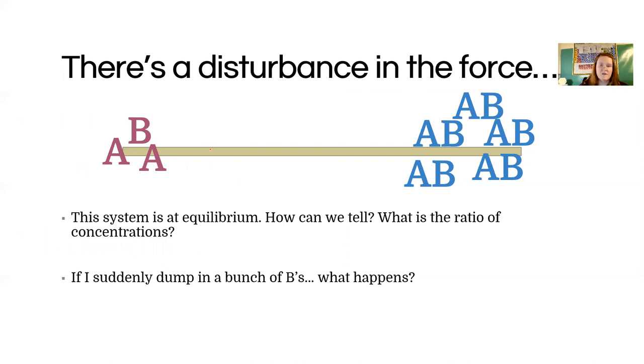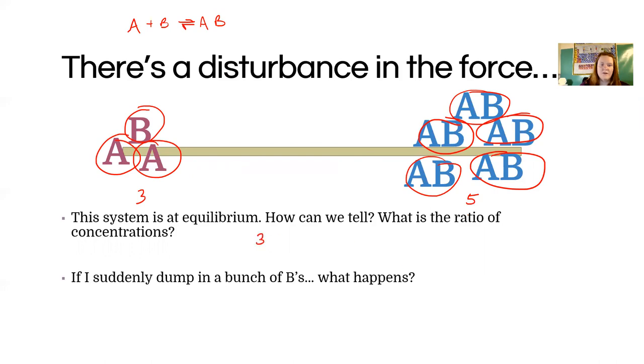Another visualization people use is a seesaw or teeter-totter, depending on what part of the country you've learned English in. This reaction is going to be just A plus B goes to AB. Our reactants are on the left and our products are on the right. Here we have three particles of reactant and five particles of product. That's a three-to-five ratio, three reactants and five products. This would be at equilibrium. It just happens to be the ratio that they have. Here's a good question that tied into our simulation: I want to know which reaction, forward or reverse, has a higher activation energy. That's going to be a question on our learning check as well.